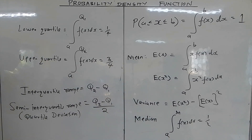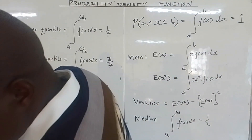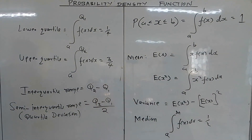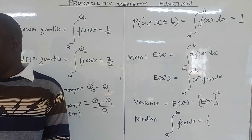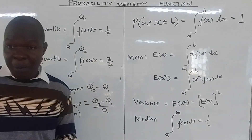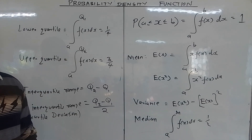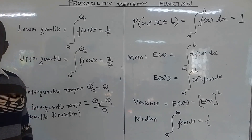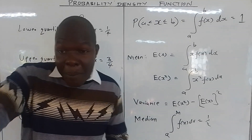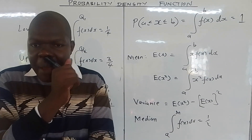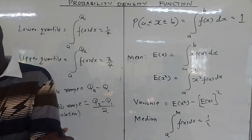How do we get the mode of a continuous random variable? The mode is the most frequent data value — the value which appears most in the given problem, whether discrete or continuous. So when looking for the mode in a continuous random variable, we are looking at the point where we get the maximum value of the probability density function.